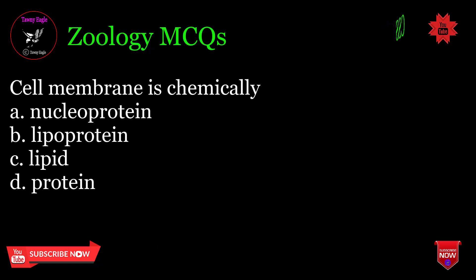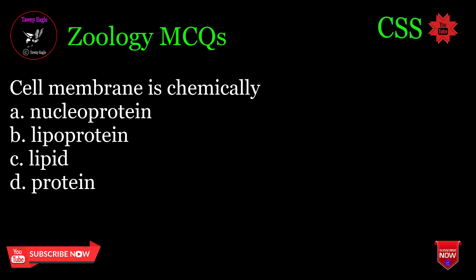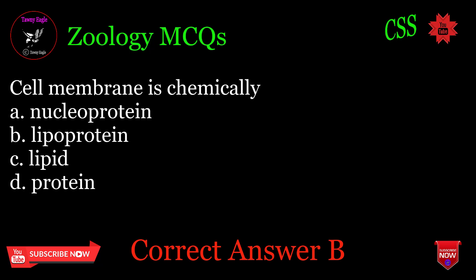Cell membrane is chemically: A. Nucleoprotein, B. Lipoprotein, C. Lipid, D. Protein. Correct answer: B.